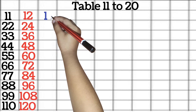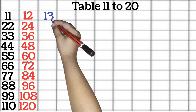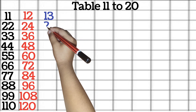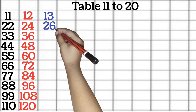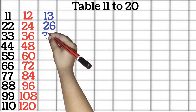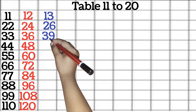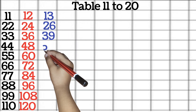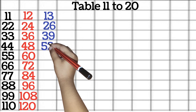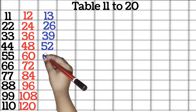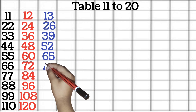Table of 13. 13 1 jah 13. 13 2 jah 26. 13 3 jah 39. 13 4 jah 52. 13 5 jah 65.